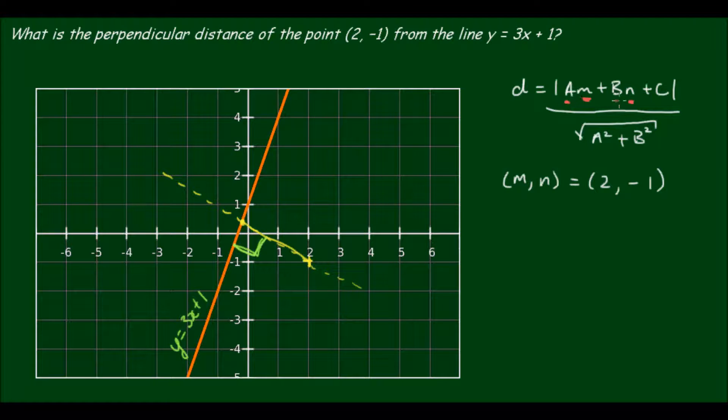And the constants a, b and c are the constants of the linear equation. So if I write a general linear equation in standard form, it goes Ax + By + C = 0. And if I write our linear equation in standard form, we would have 3x - y + 1 = 0.